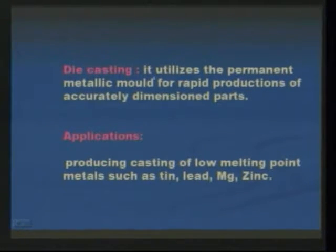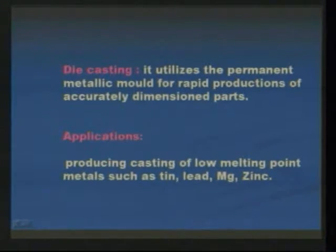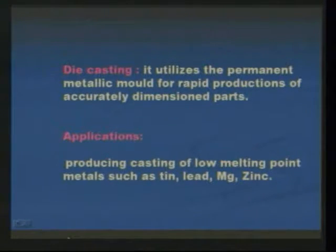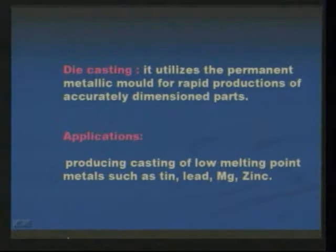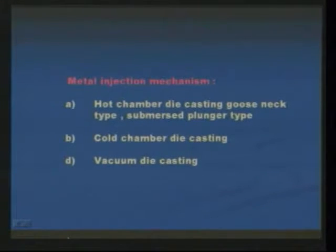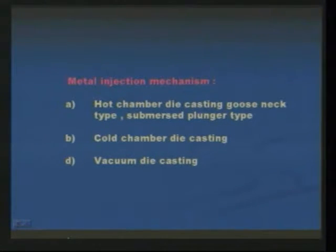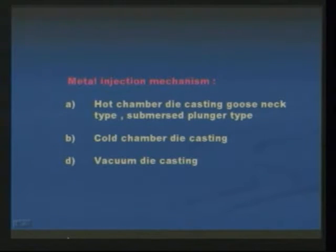The next one is die casting. It utilizes a permanent metallic mold for rapid production of accurately dimensioned parts. Die casting is originally used in the production of low melting point metals such as tin, lead, magnesium, and zinc. There are different metal injection mechanisms: first, hot chamber die casting (gooseneck type and submerged plunger type); second, cold chamber die casting; and third, vacuum die casting.